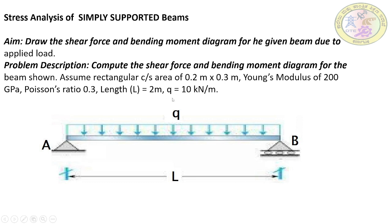The length of the beam is 2 meters and the intensity of UDL is 10 kilonewton per meter, which equals 10 Newton per millimeter — the kilonewton-to-Newton conversion (×10³) and meter-to-millimeter conversion (÷10³) cancel each other out. The UDL is represented by a rectangle because its intensity remains the same throughout the beam at any cross-section. Uniformly varying load (UVL), by contrast, is represented by a triangle because its intensity varies along the beam length.